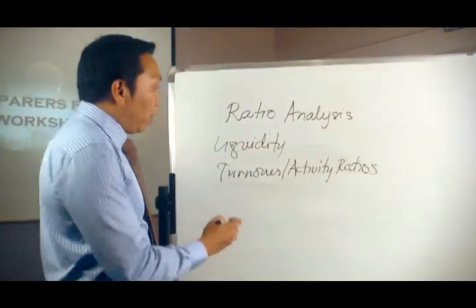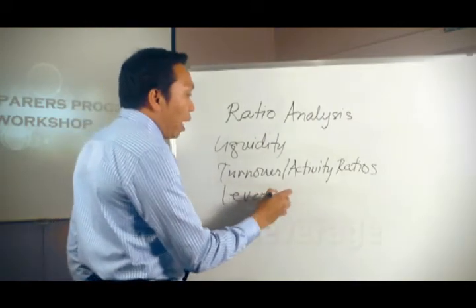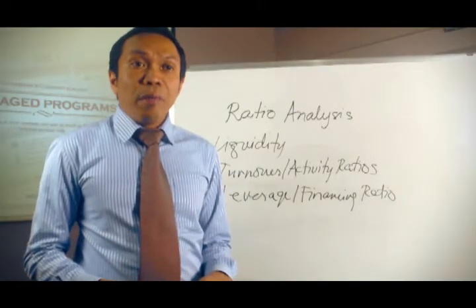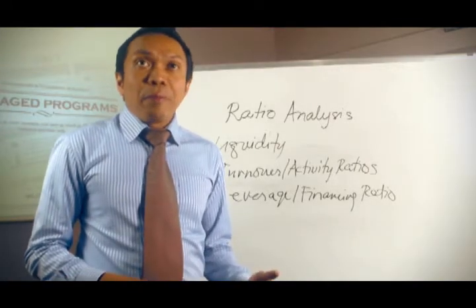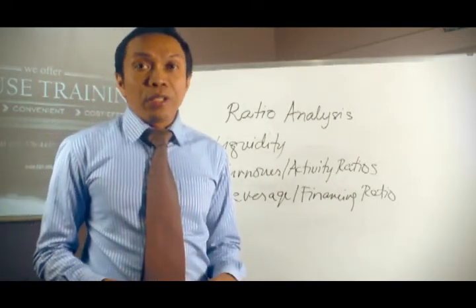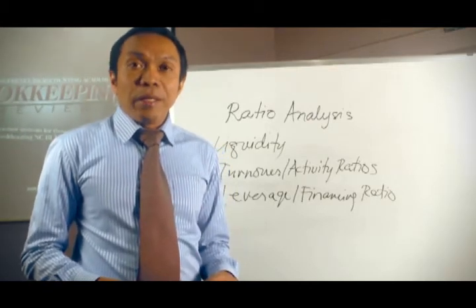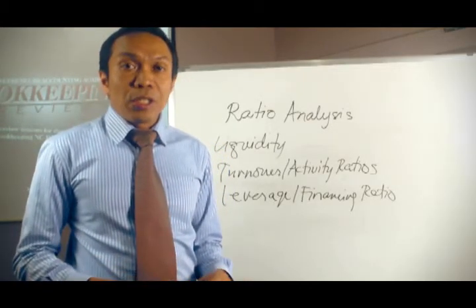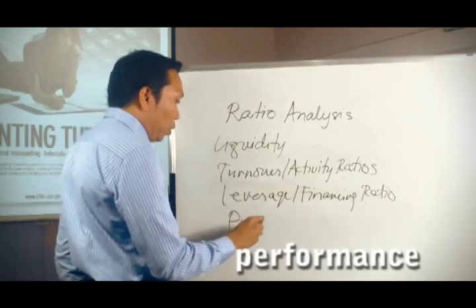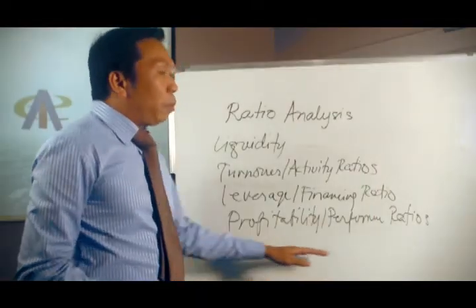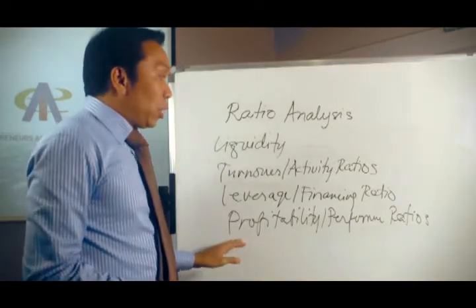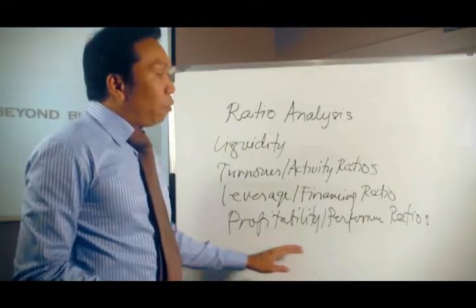The third classification of ratios is leverage or financing ratios. The ability of the company to pay both short-term and long-term obligations is measured. Banks or creditors are particularly interested in leverage and financing ratios because they would like to know if their debtors or prospective debtors would be able to pay their obligations. And the last general classification of ratios is profitability or performance ratios, which measures how profitable the company is over a certain period of time.